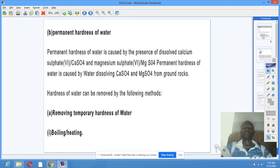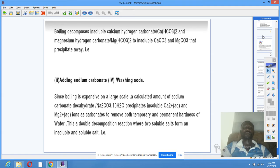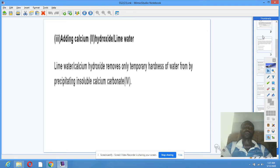Temporary hardness of water. Removal of hardness of water. How can temporary hardness be removed? One, boiling or heating. Two, adding sodium carbonate or washing soda. Three, adding calcium hydroxide or lime water.